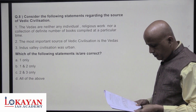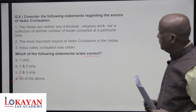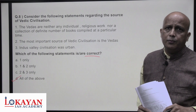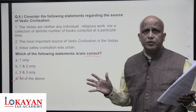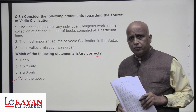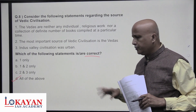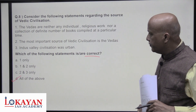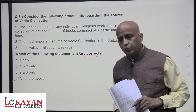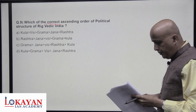Consider the following statements about sources of Vedic civilization. Vedas are neither individual religious works nor a collection compiled at one particular time — they were composed over a long period from approximately 1500 BC to 600 BC. They contain not only religious matter but also secular poetry and subjects. The most important source of Vedic civilization is the Vedas, though it is more a culture than a civilization. All are correct.